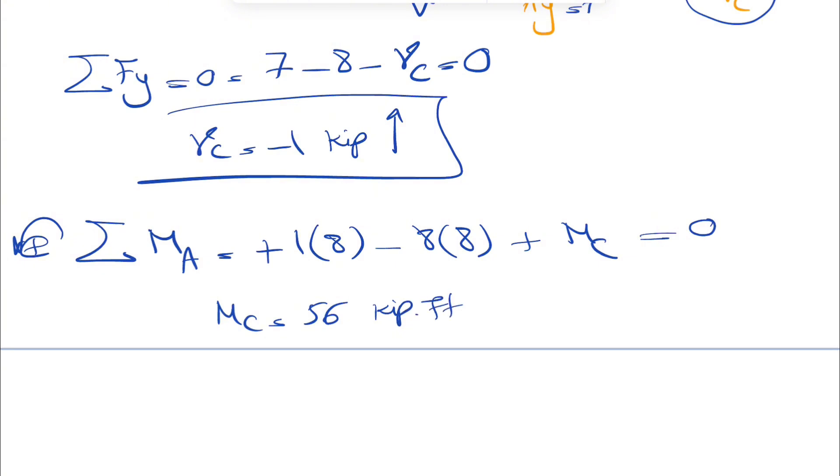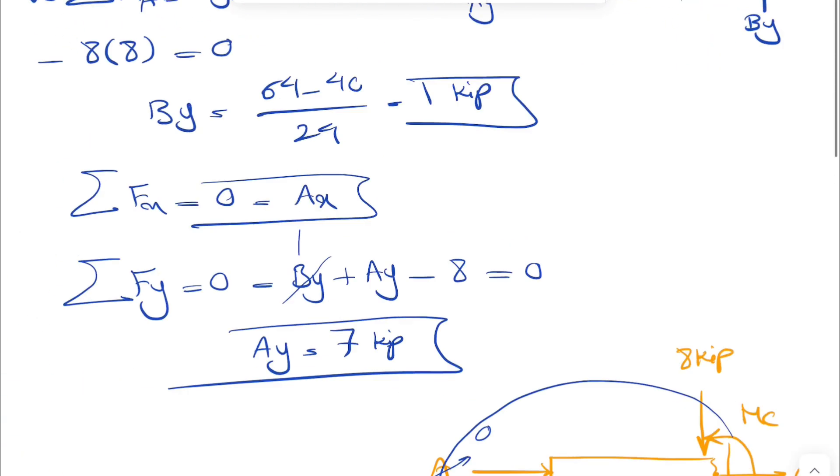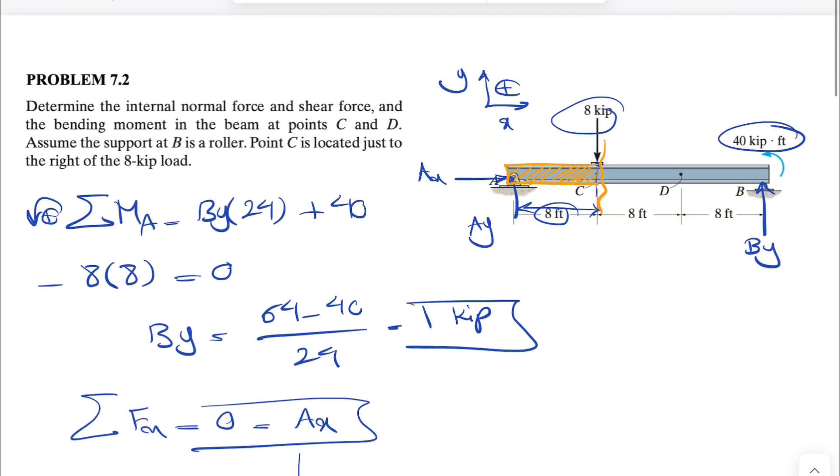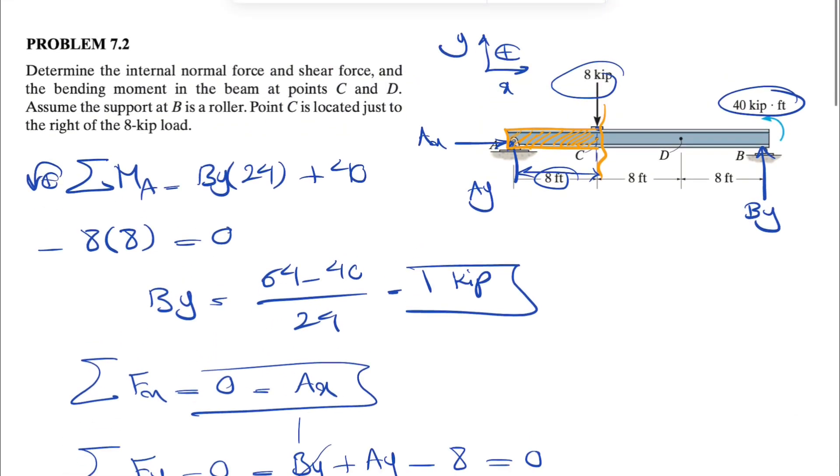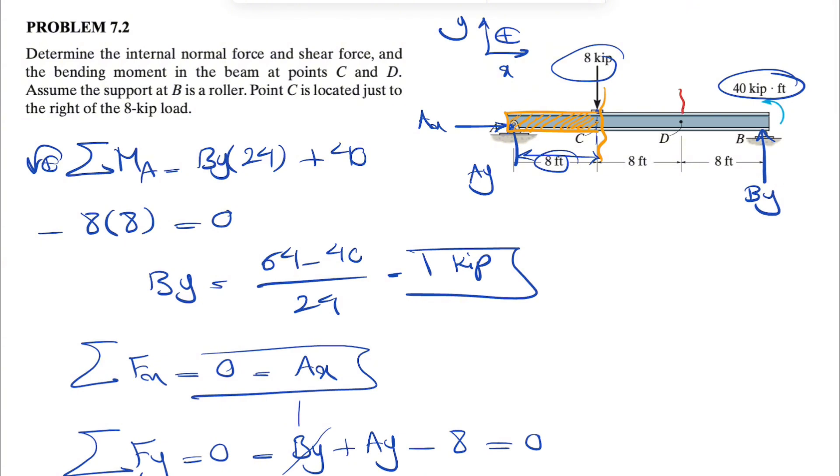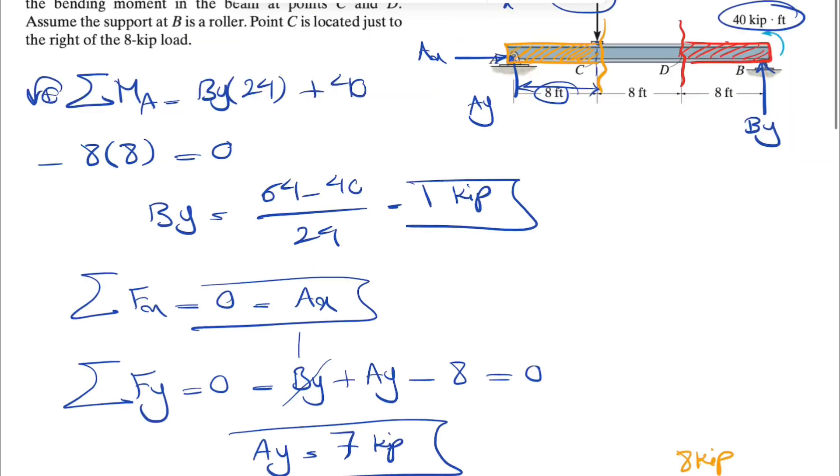We did not get a negative sign, which shows that the moment is actually counterclockwise. So that's everything for point C. We have one more. Let's show that with red. We're going to do our section at point D. We're going to consider this part of the beam. Let's just draw the free body diagram for that.